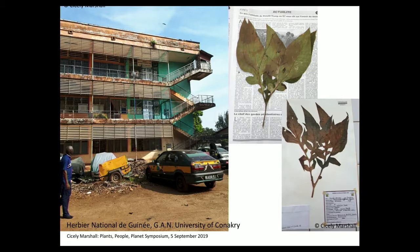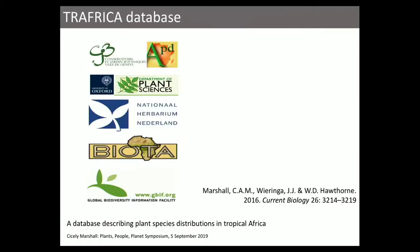Our aim is to identify conservation priority species and landscapes, so we need to put information around these species. We manage a database that brings together many of the records of plants collected in tropical Africa — it's the largest database for tropical African species distributions, holding more than three million records of about 25,000 species.